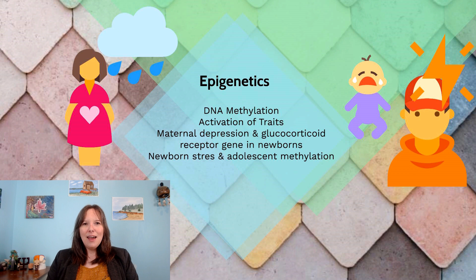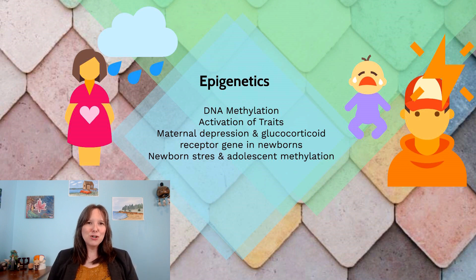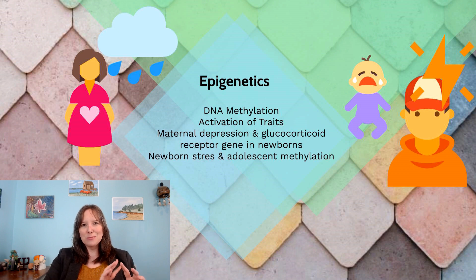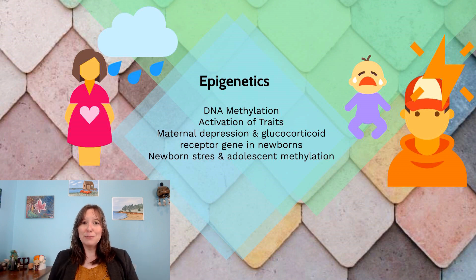The last component of the Buss and Plomin theory is epigenetics — the idea that our environment can shape us all the way down to our genes. Our environment will influence the expression of some of our genes, the methylation of our DNA, and the activation of some of our traits. When a parent is pregnant and experiences a major depressive episode, this doesn't just increase stress hormones and expose the infant to more cortisol — it also unlocks and methylates the glucocorticoid receptor gene in newborns. So the babies don't just have more stress hormone exposure in the womb; the exposure actually activates their glucocorticoid receptors, causing them to produce more cortisol and stress hormone themselves.